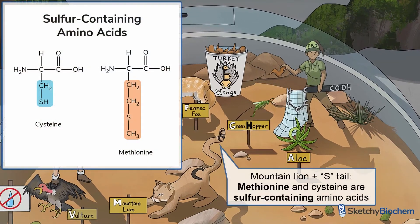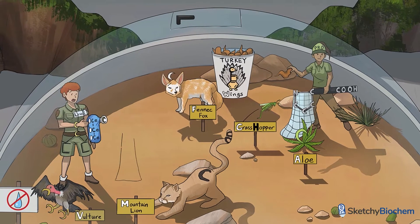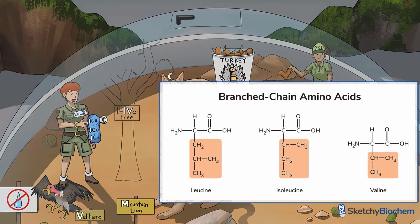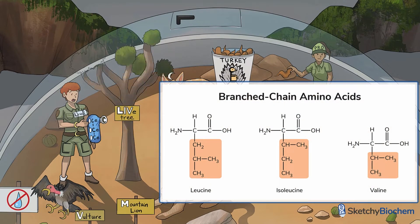See this kitty's wavy S-tail? The S is for sulfur, because methionine is one of the two sulfur-containing amino acids. Methionine is a precursor to SAM, which transfers methyl groups for many reactions. Methionine is also needed to make cysteine, another sulfur-containing amino acid.